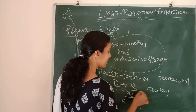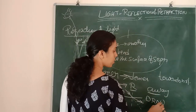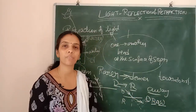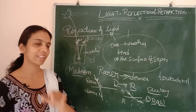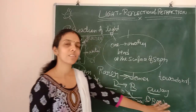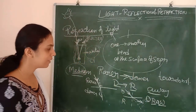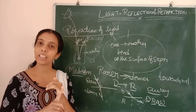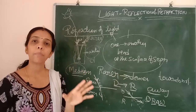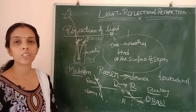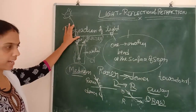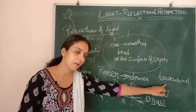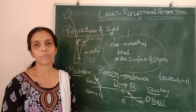To remember this, I give the shortcut: DRAW — Denser to Rarer Away from the Normal. Remember any one case and you can derive the other. So: rarer to denser bends towards the normal, and denser to rarer moves away from the normal. Now we have learned the definition of refraction and how bending happens.